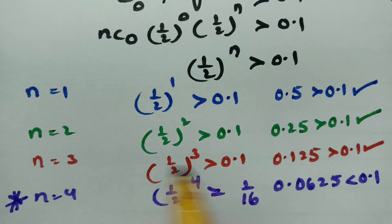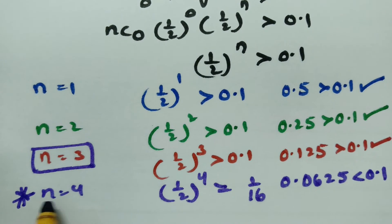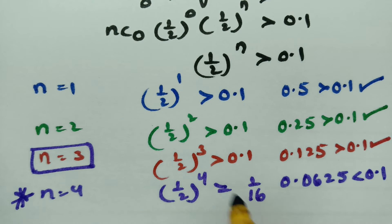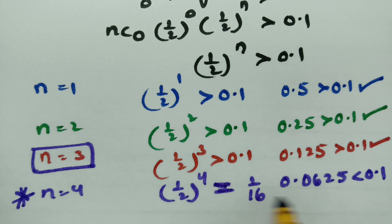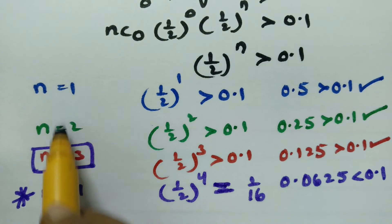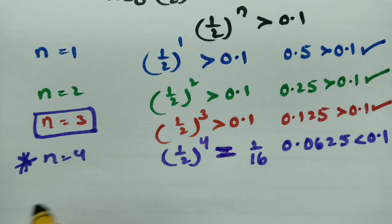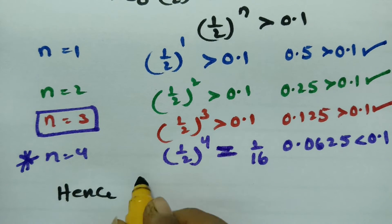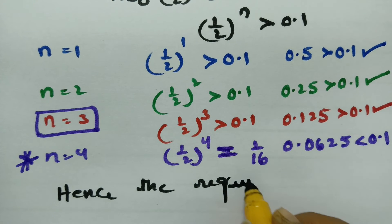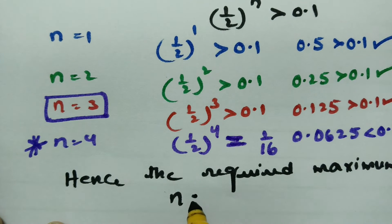What is the maximum value of n to satisfy this relation? The maximum value of n to satisfy this relation is n equal to 3. When n equals 4, the value 1/16 = 0.0625 is less than 0.1. We need greater than 0.1, so the maximum value is n equal to 3.